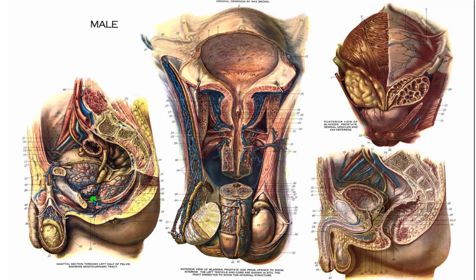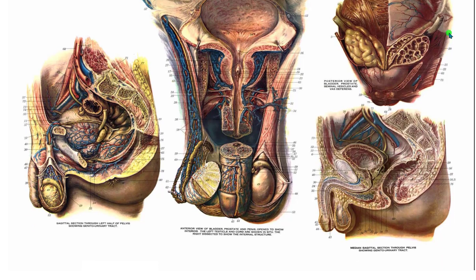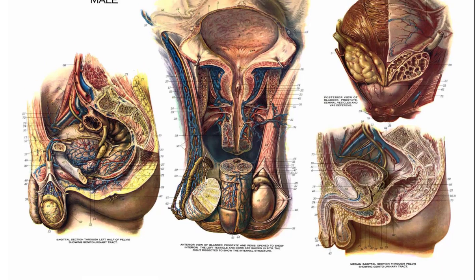I can see a little bit of the muscle that forms the external urethral sphincter, although I'll see a better view of it elsewhere. This is going to be the root of the penis, where it's within the torso of the body, and then the body or the shaft of the penis extends outward from there.